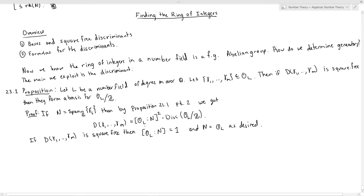Just to remind you what went into this: if you write down the change of basis matrix from some basis of O_L over Z to this sub-module, then the discriminant ratio is the determinant of that matrix squared, which in the case that your ring is Z also happens to equal the index of the sub-module. That comes from the lecture on free modules.